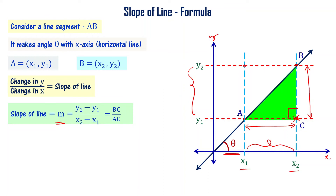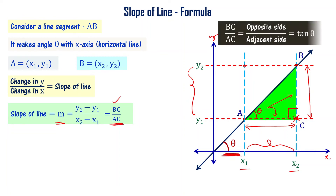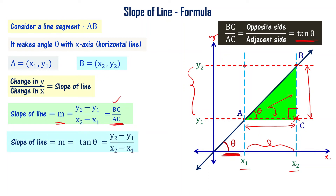Now, you can see the right angle triangle, and trigonometry concepts are applicable. The angle theta is an acute angle. BC is the opposite side to theta and AC is the adjacent side to theta. Opposite side by adjacent side equals tan theta — that is a trigonometry ratio. Tan theta equals opposite side by adjacent side for acute angle theta. BC by AC equals tan theta. So slope of line M equal to tan theta, that is equal to y2 minus y1 divided by x2 minus x1. Please note this formula.